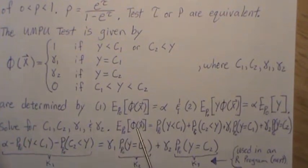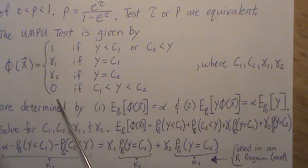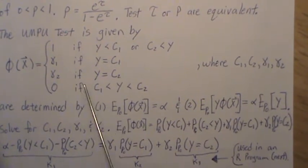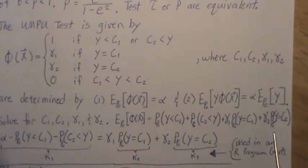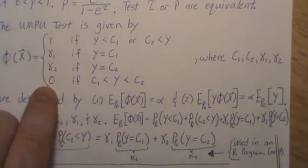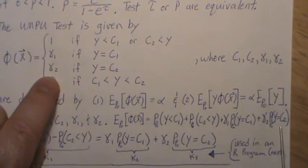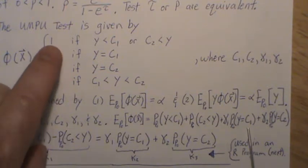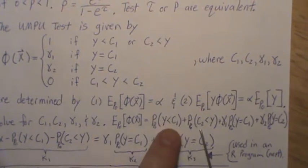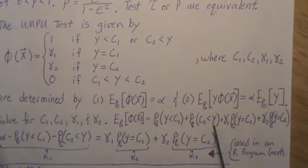C1, C2, gamma 1, gamma 2 are determined by these two equations. First, the expected value of the test function assuming the null hypothesis is true is alpha. The second equation is that the product of Y times our test function assuming the null hypothesis is true is equal to alpha times expected value of Y. Now let's start solving for C1, C2, gamma 1, gamma 2 using the first equation. Notice phi is a discrete value, so expected value of a discrete random variable is the value that it can assume times the probability of it happening.